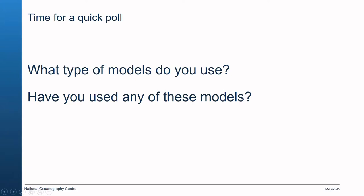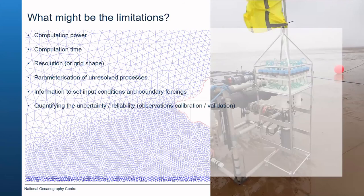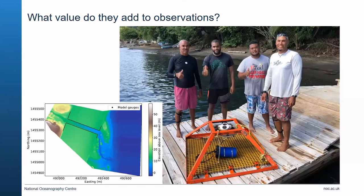If you're using a model it's very important to understand its limitations. These might include computer power, computational time, the resolution of the grid, the shape of the grid — whether it's squares or triangles — and whether it resolves the coastline. You also need to understand where parameterisations have been applied for unresolved processes, and where information is available for boundary conditions or forcing. You also need to understand the uncertainty and be able to validate or calibrate models, so some observations are often needed alongside a modelling application.